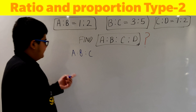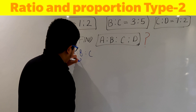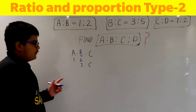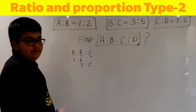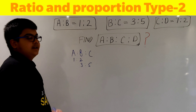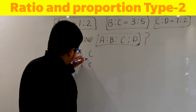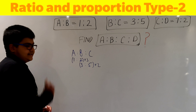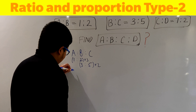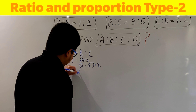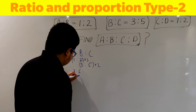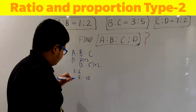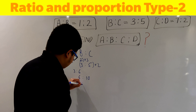Step 1 is to find A:B:C. We already know this trick. A:B is 1:2 and B:C is 3:5. We need to make the values of B the same — here B is 2 and there B is 3. Multiplying the first ratio by 3 and the second by 2 makes both B values equal to 6. So the first ratio becomes 3:6 and the second becomes 6:10, giving us A:B:C = 3:6:10.